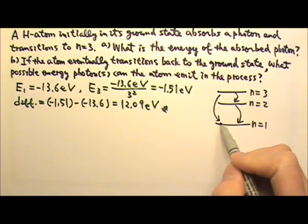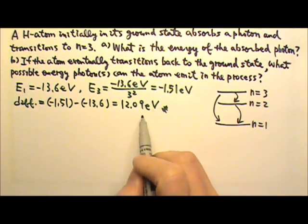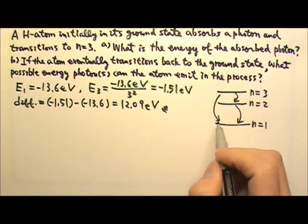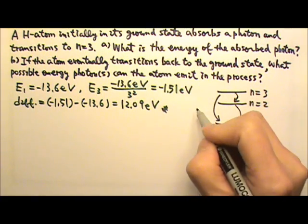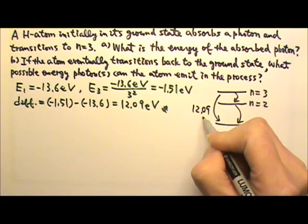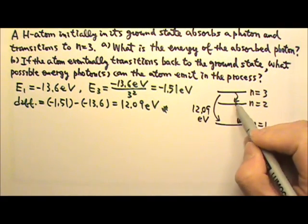For 3 to 1, of course that's the backwards of this, so it would give off a photon with the same amount of energy, 12.09 eV. For these two transitions, we'll need to know the energy for n equals 2.